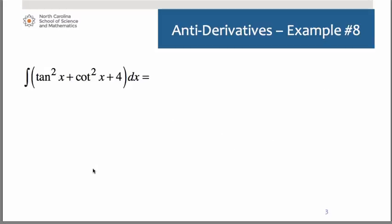Here we have antiderivative of tangent squared of x plus cotangent squared of x plus 4. Well we do not have any rules for the antiderivative of tangent squared or cotangent squared. So this is a case in which we're going to have to use our Pythagorean identities in order to write it first.